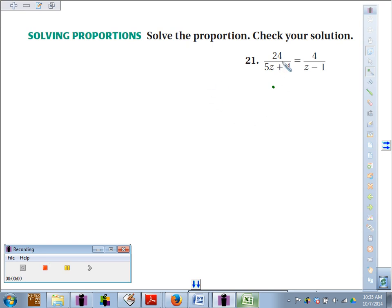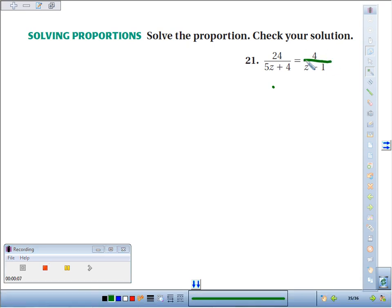For problem 21, we're going to solve the proportion: 24 over 5z plus 4 equals 4 over z minus 1. We'll set up our butterfly wings and use the fact that cross products are always equal in proportions.